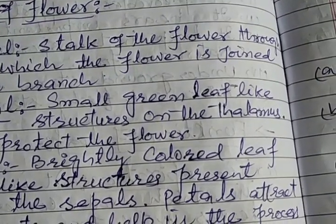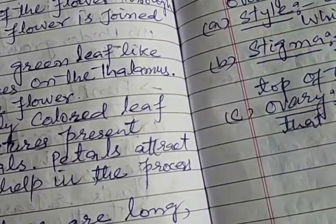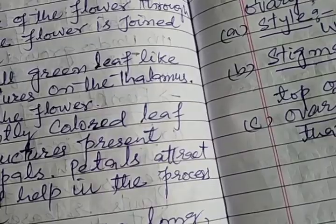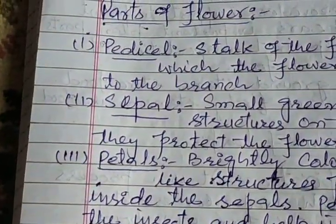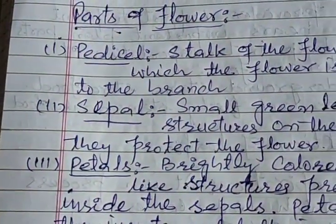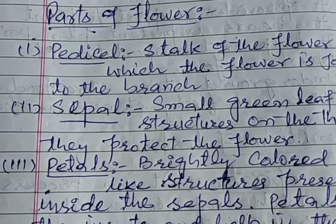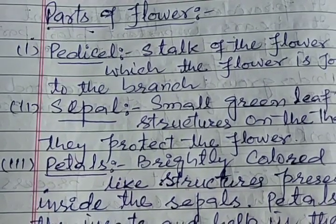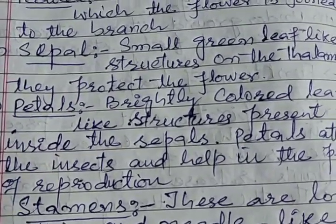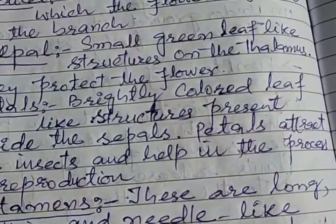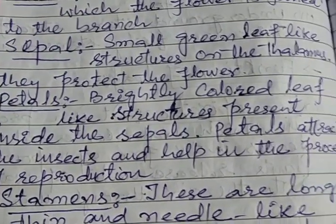Number two — sepal, a small green leaf-like structure on the flower. Sepals protect the flower. They are the small green part of the flower.